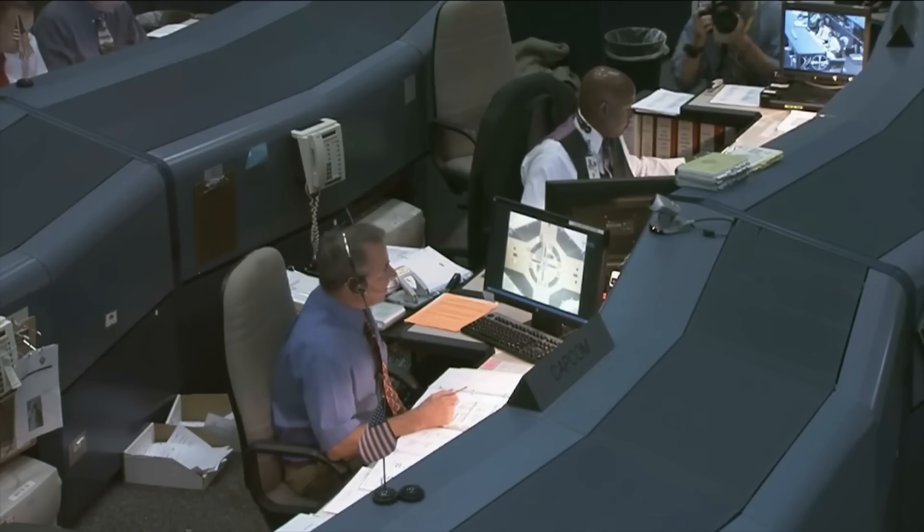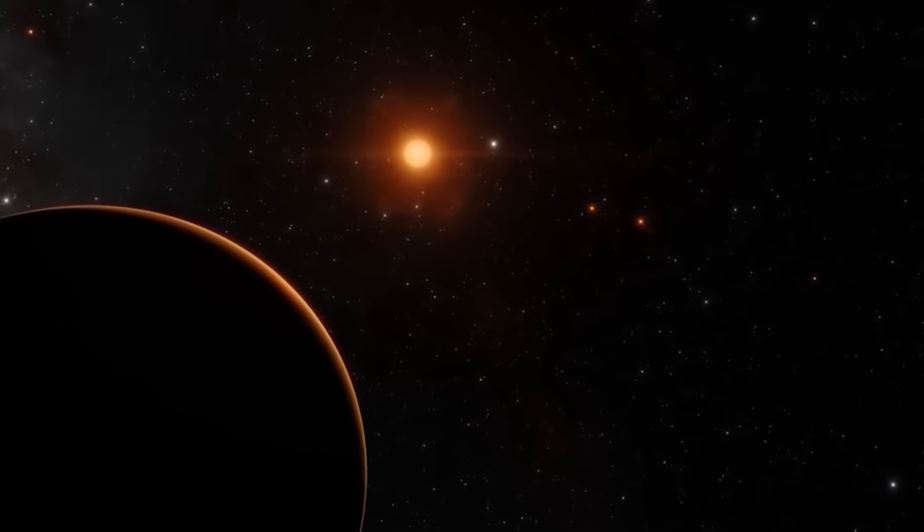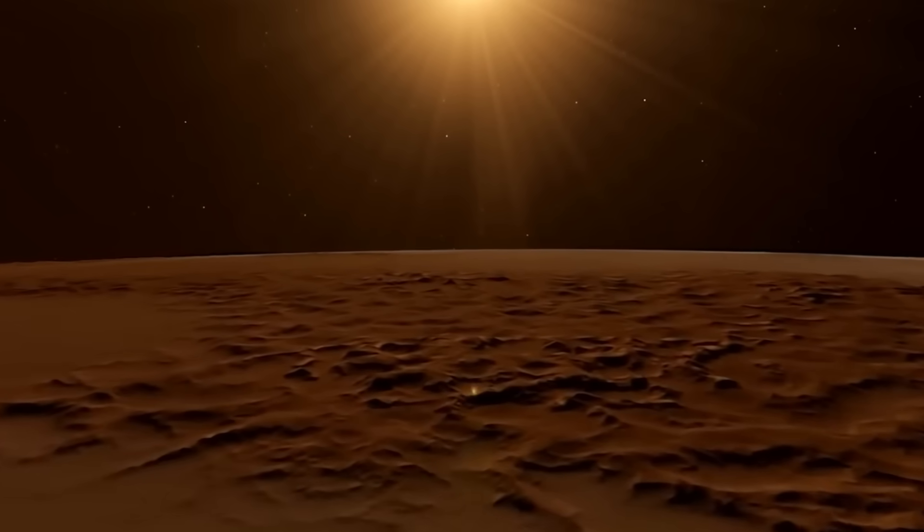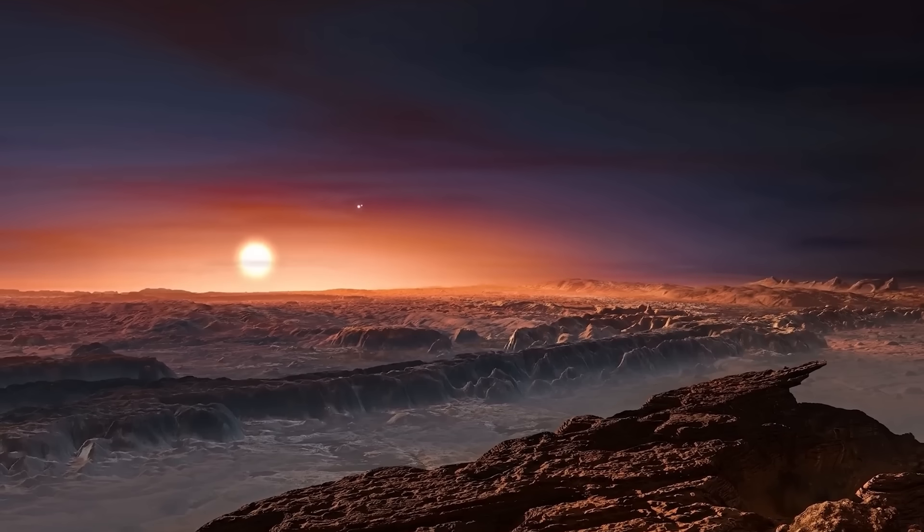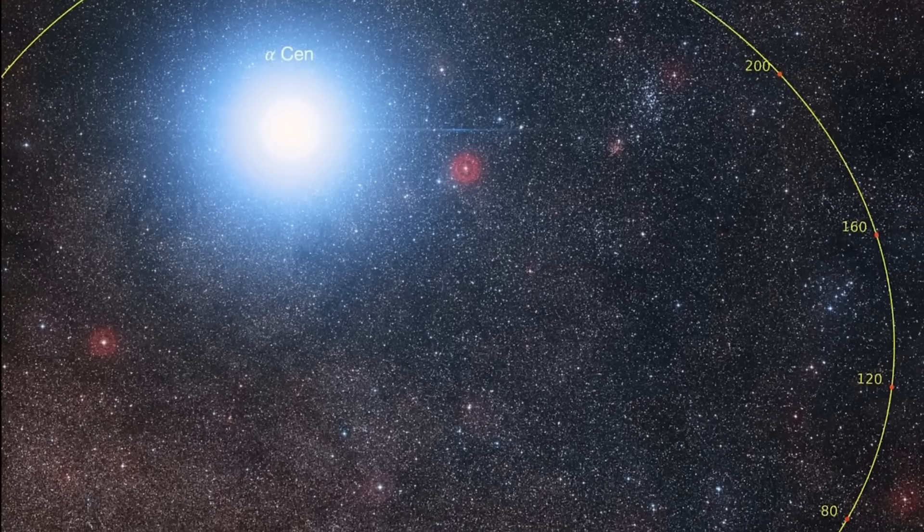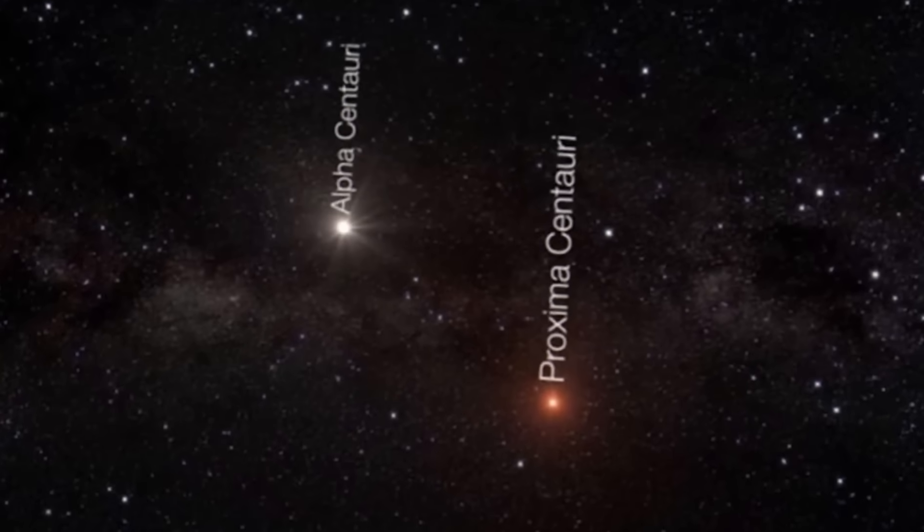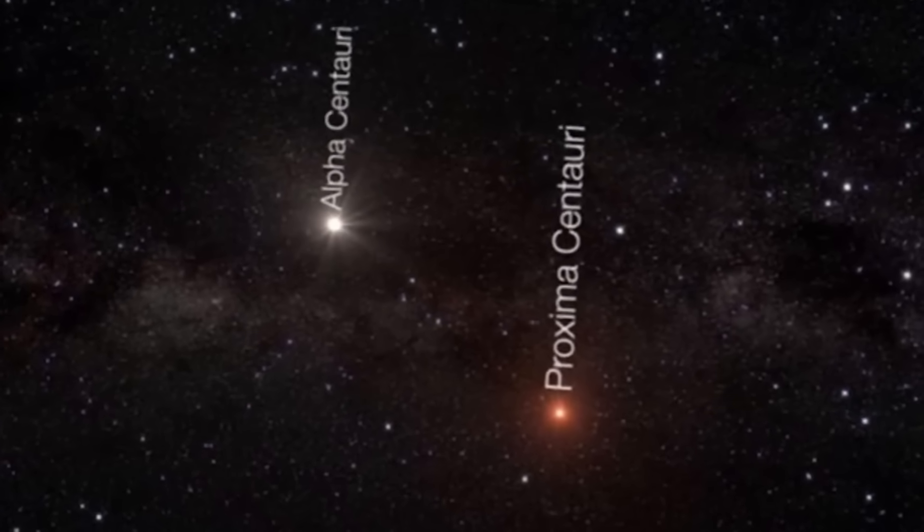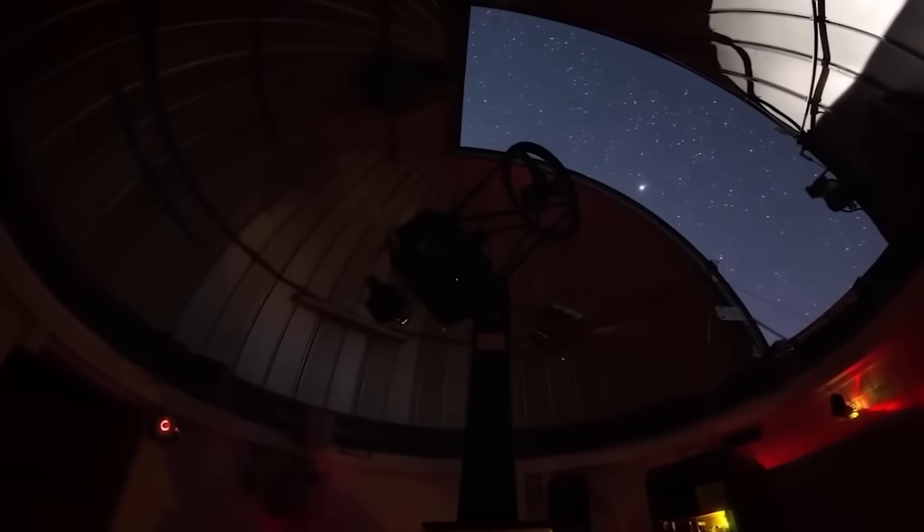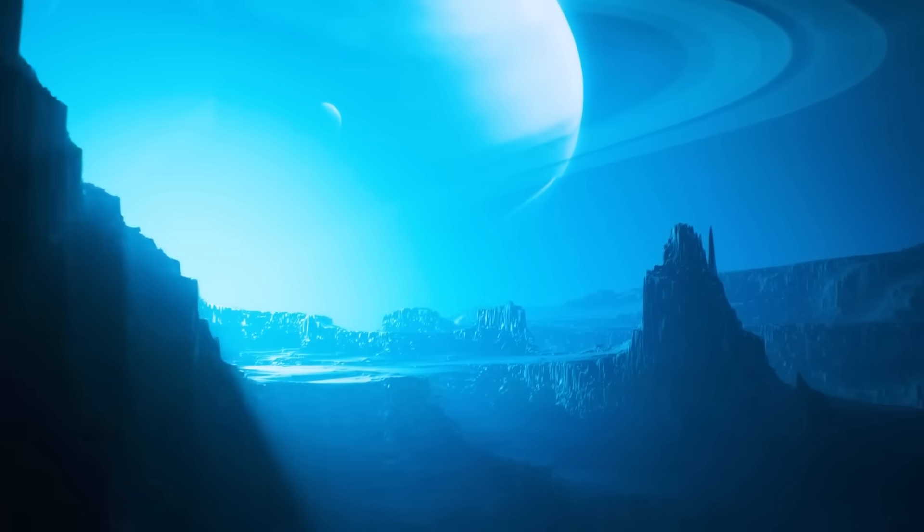However, once the launch system is in place, it may be reasonably inexpensive to send more probes, increasing the likelihood that we will be able to explore star systems like Proxima Centauri. After this, planets beyond our solar system known as exoplanets have recently attracted a great deal of scientific interest. There have been thousands of exoplanet discoveries since the initial confirmation of planets around neutron stars in 1992. Among these, there are many Earth-sized planets that are situated within the habitable zones of their respective stars.